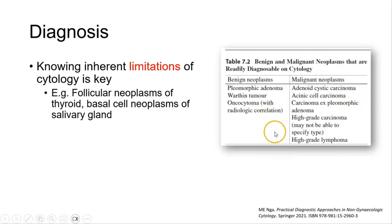This is just a small table to show some of the benign and malignant neoplasms that are readily, definitively diagnosable on cytology in the salivary gland, for example, pleomorphic adenoma, Warthin tumor.